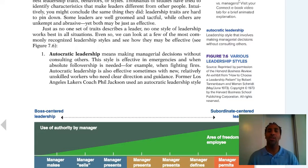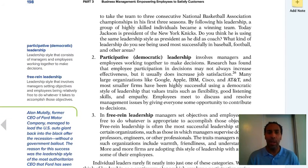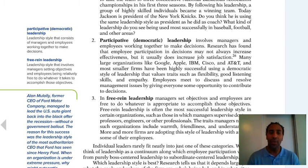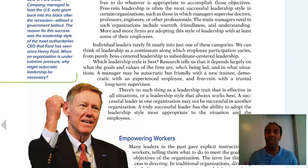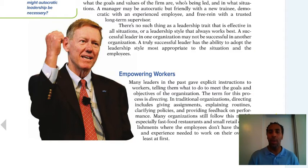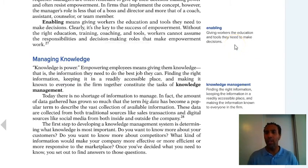Autocratic leadership means making managerial decisions without consulting others — 'I don't need your opinion; I've been here long enough, I'm going to make the decision.' A participative leader involves managers and employees working together to make decisions — it's democratic, everybody's involved, and you get a lot more buy-in. In free reign leadership, managers set objectives and employees are free to do whatever is appropriate to accomplish those objectives — common in sales: go do whatever you need to get done as long as you deliver results. Empowering workers means giving people responsibility and power to make decisions, and enabling means giving workers the education and tools they need to make decisions.